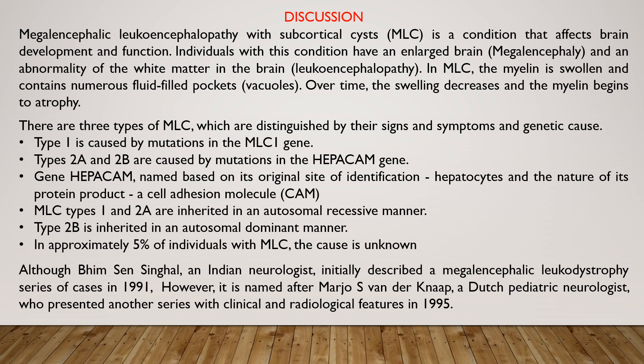There are three types of MLC distinguished by their signs, symptoms, and genetic cause. Type 1 is caused by a mutation in the MLC1 gene. Types 2A and 2B are caused by mutations in the HEPACAM gene — named based on its original site of identification in hepatocytes and the nature of its protein product, a cell adhesion molecule. MLC Type 1 and 2A are inherited in an autosomal recessive manner; Type 2B is inherited in an autosomal dominant manner. In approximately 5% of cases with MLC, the cause is unknown.